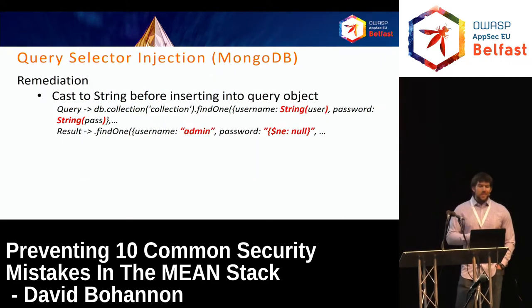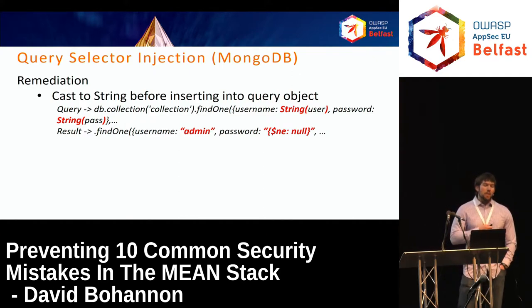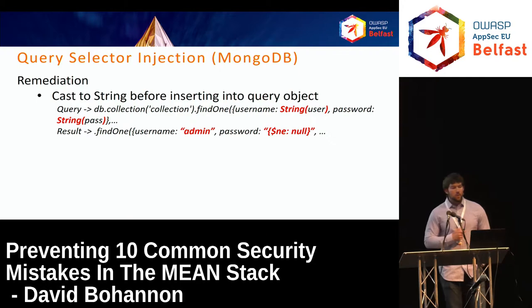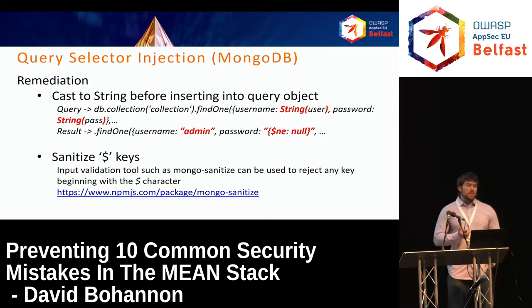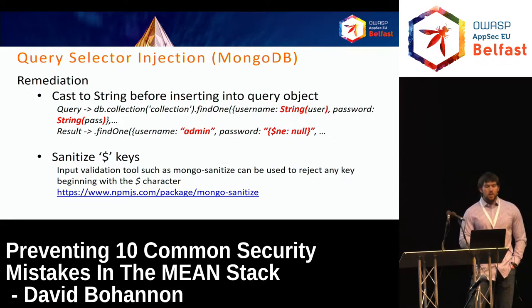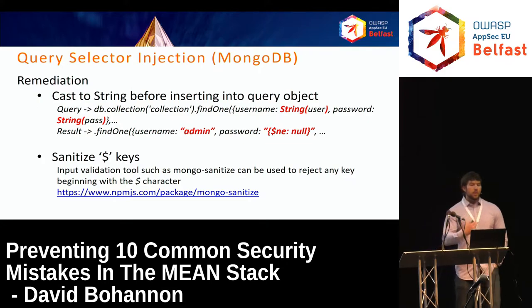One way to fix this is to simply cast input to a string, resulting in a query looking for the string representation '[object $ne: null]' rather than the operator itself. The other option is to sanitize parameters that begin with dollar-sign keys — either manually or using off-the-shelf packages — so that if an attacker tries to inject query operators, they get stripped out.